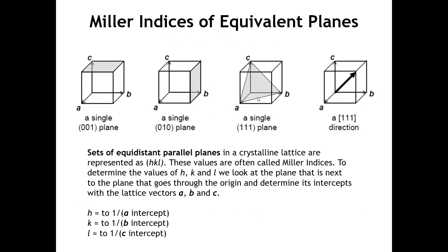We're going to spend quite a bit more time talking about lattice planes than directions. The notation for lattice planes is similar and is called Miller indices, where we put the values h, k, l into parentheses. When we speak about lattice planes, we are usually talking about a set of parallel planes — in an infinite crystal, there are infinitely many parallel planes with a certain spacing. To determine hkl, we look at the intercept of the plane closest to the plane that goes through the origin.